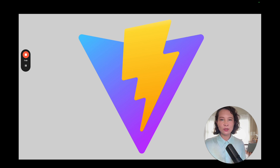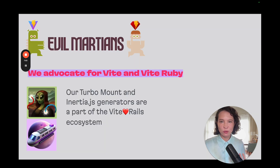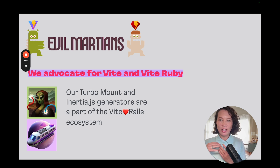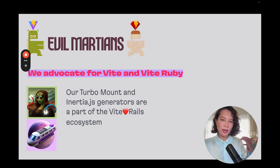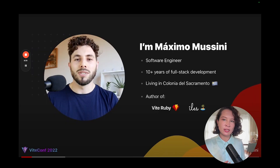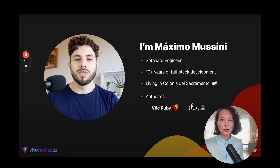Vite and Vite Ruby are the technologies we advocate for, because we believe this is the right solution. We get the best developer experience and also abstract away from having to integrate with each tool — ESBuild and Rollup today, and something else tomorrow. We're building TurboMount and Inertia.js generators as part of this Vite-plus-Rails ecosystem. I want to give a shout out to the author of Vite Ruby, Maximo Mussini, who spoke at ViteConf a couple of years ago. He's done an amazing job integrating Vite into the asset lifecycle inside Rails.